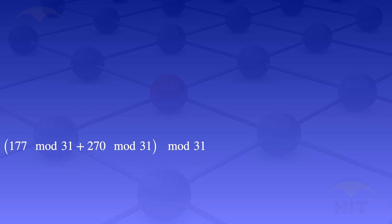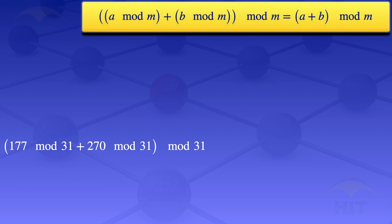In that case, we use the formula which says (a mod m + b mod m) mod m equals (a + b) mod m, because we have this common mod m appearing multiple times.